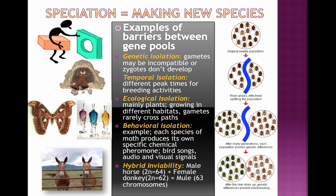Behavioral isolation occurs when animals attract mates through specific dances or chemicals, and if one group can't respond to those signals, there's no compatibility. Another barrier occurs when sperm and egg are compatible but the resulting offspring is sterile — like the mule, produced by a male horse and female donkey. With 63 chromosomes, mules cannot carry out meiosis effectively to produce viable gametes. Those are some examples of barriers that can arise between gene pools.